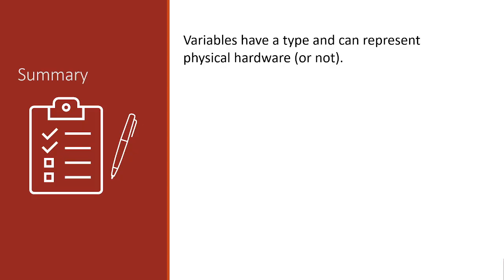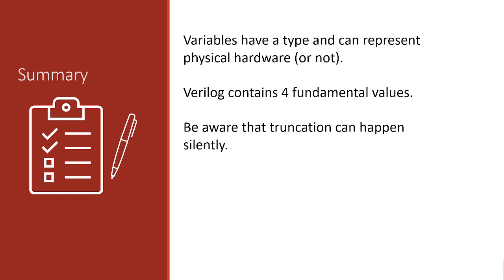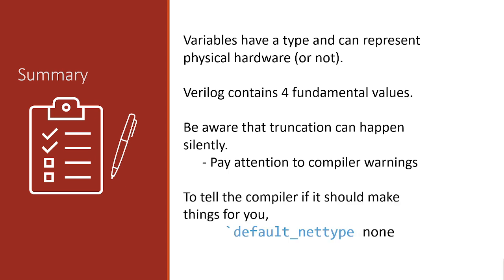Let's summarize what we covered in this module. Variables have a type and can represent physical hardware or not. Verilog contains four fundamental values. Be careful of how the compiler may truncate values when you transfer values between registers of different widths, and pay attention to compiler warnings. You can tell the compiler to never make variables for you implicitly by specifying the compiler directive `default_nettype none`.